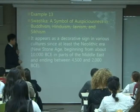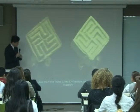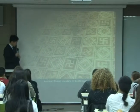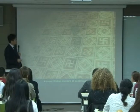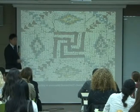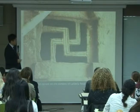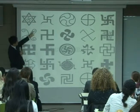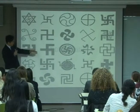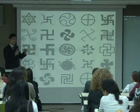Here are some examples: a swastika found in the Indus Valley, an ancient Roman mosaic from Spain, one from Israel, and one from Ethiopia. These are many other ways you could draw it, and some of these are from actual findings.